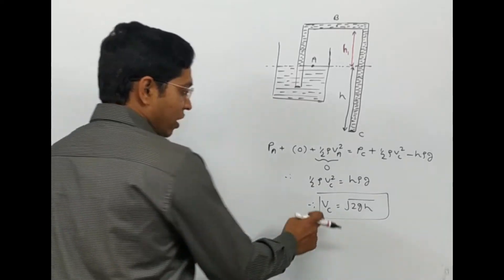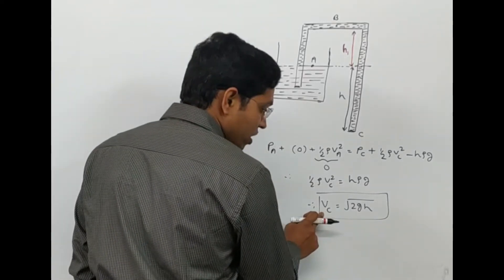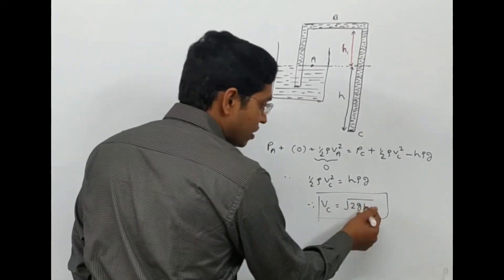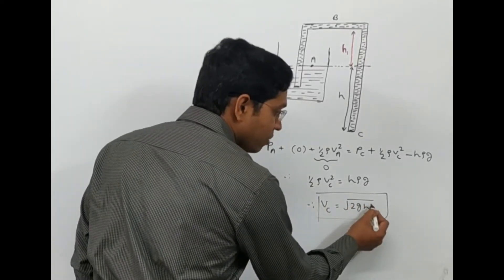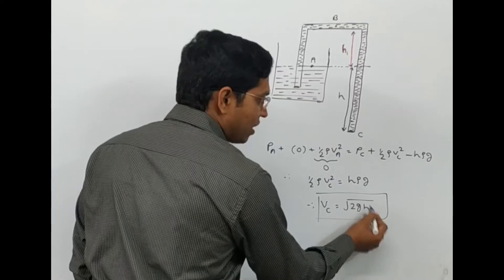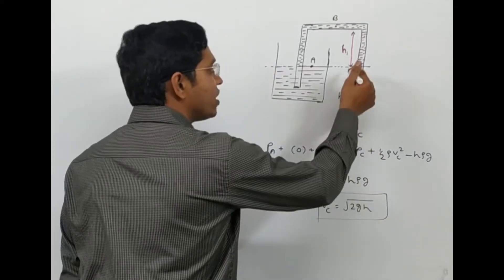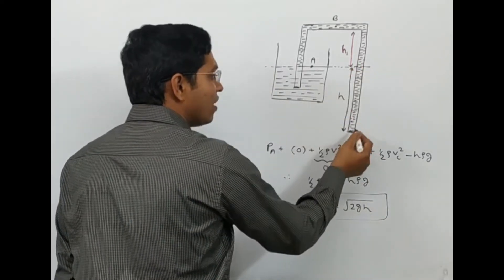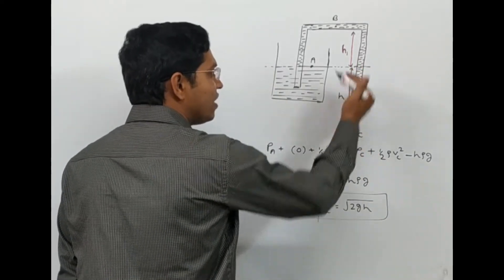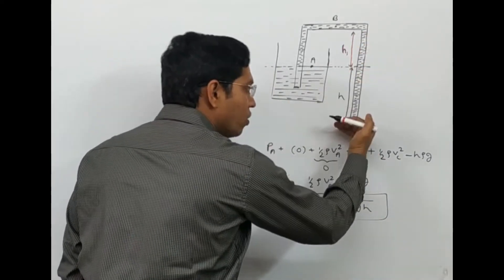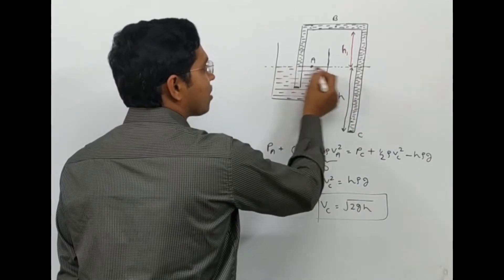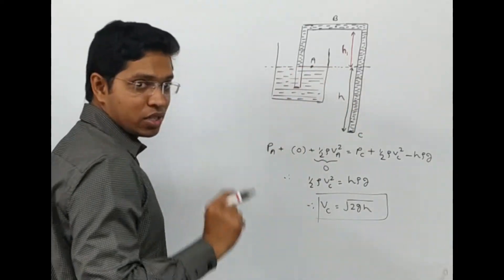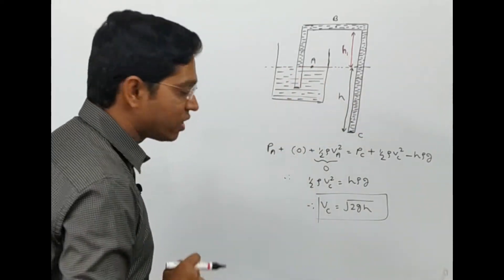For this velocity VC to be a real number, h must be positive — meaning point C must be at a lower level than the water surface. This is the first required condition for the siphon to work.